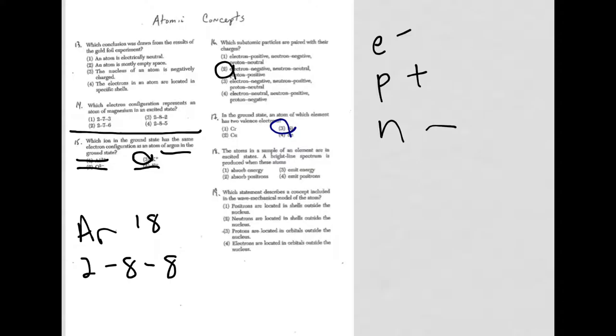I go to 18. Atoms in a sample of an element are in the excited states. A bright line spectrum is produced when these atoms... Well, the bright line spectrum is going to be produced when the electrons go from the excited state back to the ground state, and they're going to emit energy. And that would be choice three.